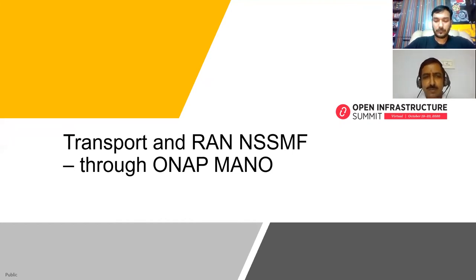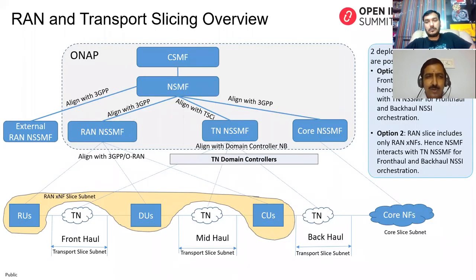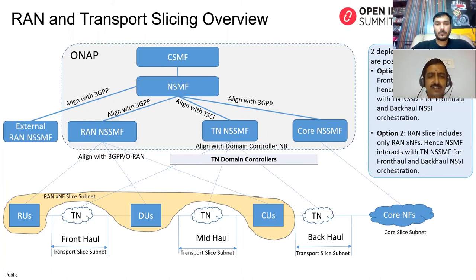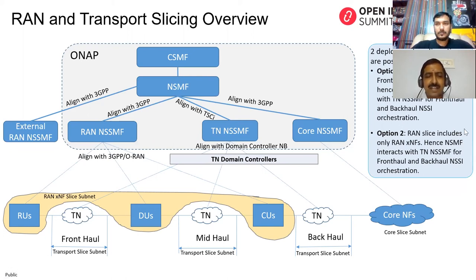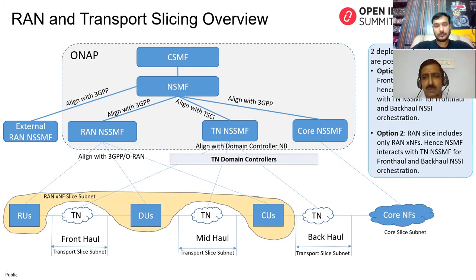Looking at RAN slicing in 5G: the RAN can be decentralized with RU, CU, and DU not co-located and physically separate, connected through fronthaul and midhaul. From a slicing perspective with this disaggregated RAN, there are two deployment options based on inputs from community members and service providers. In option one, the RAN NSSMF is responsible for the RAN as a whole — encompassing RAN network functions (RU, CU, DU) as well as transport connectivity (fronthaul and midhaul), invoking the transport NSSMF for slice instances.